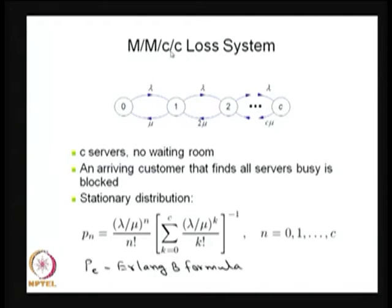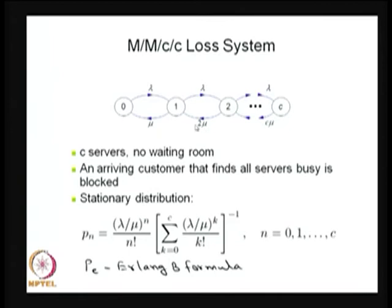An example is a parking lot with C parking spaces and cars arriving. If we assume the inter-arrival time is exponentially distributed and the time a car spends in each parking space is exponentially distributed, then the parking lot problem can be visualized as the M/M/C loss system. We have C identical servers and no waiting room. You can also think of it as a self-service system with capacity C.